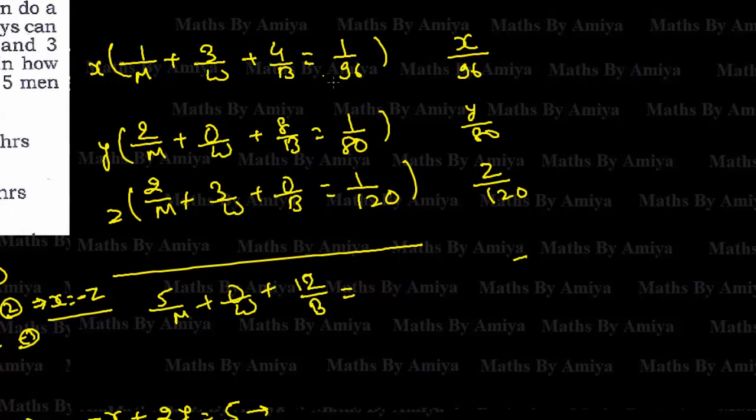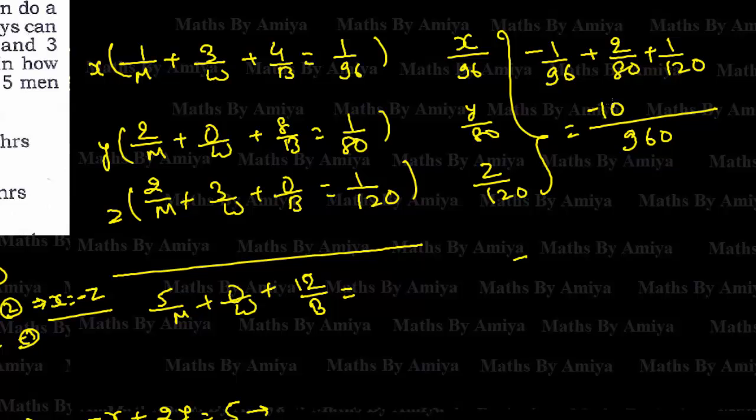Just know. Time is the reverse part. And we have to add. So we have minus 1 by 96 because x is minus 1 plus 2 by 80 plus 1 by 120 because z is nothing but 1. LCM is 960. That is minus 10 plus 24 plus 8. This is nothing but 22 upon 960.